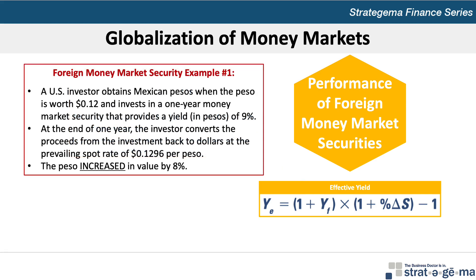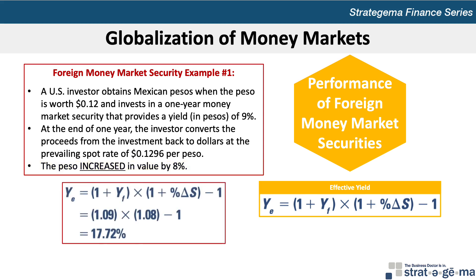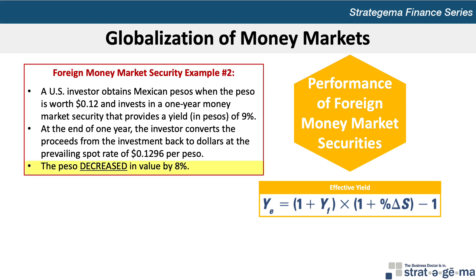For example, assume a U.S. investor obtains Mexican pesos when the peso is worth 12 cents and invests in a one-year money market security that provides a yield in pesos of 9%. At the end of one year, the investor converts the proceeds back to dollars at the prevailing spot rate of 12.96 cents per peso. In this example, the peso increased in value by 8%. The effective yield earned by the investor is 17.72%, calculated as (1 + 9%) × (1 + 8%) − 1. However, such an investment is subject to the risk that the currency will depreciate over time. If the peso had decreased by 8%, the effective yield on the investment would have been only 0.28%.